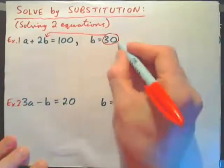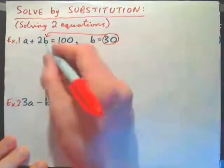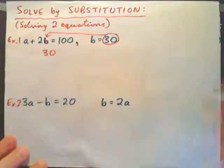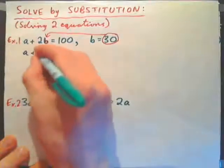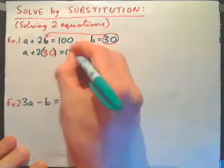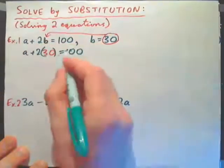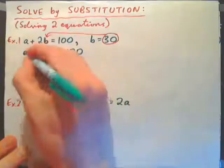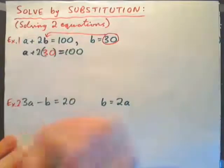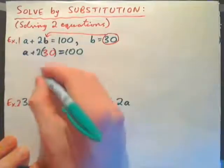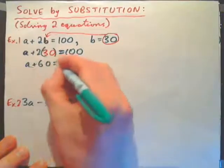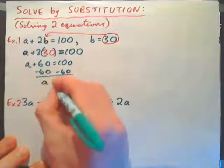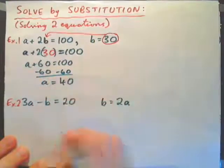We have b equal to 30, meaning b is the same as 30, so in place of b in this equation I can put the number 30. So I will have a plus 2 times 30 equals 100. Now I have an equation with one variable, a. We have a plus 60 equals 100; subtract 60 from both sides and we have a equals 40. An apple is 40 cents.